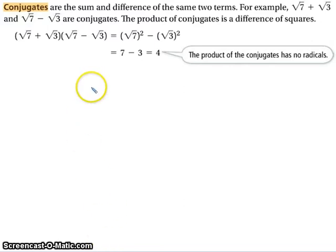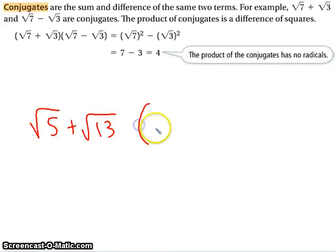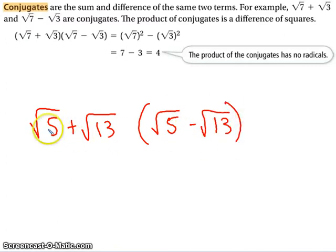Basically, what we're doing is we're going to rationalize the denominator through this process. So if I have something like the square root of 5 plus the square root of 13, and I want to get rid of it, I can multiply by the conjugate of it. Basically, the opposite symbol. The first and second piece stay the same. The symbol changes.